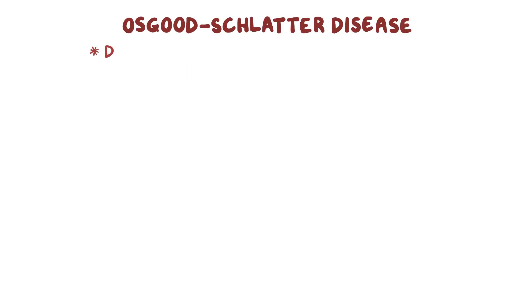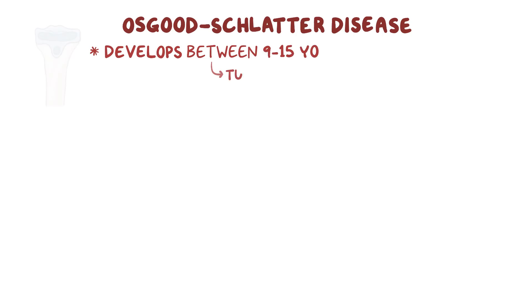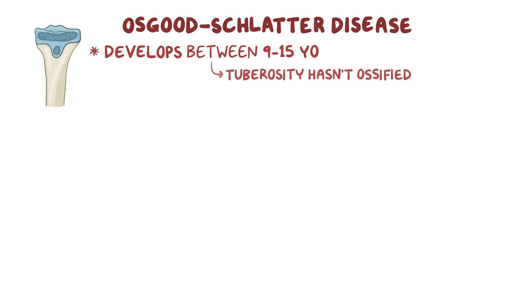Osgood-Schlatter disease typically develops between the age of 9 and 15, when the tuberosity hasn't ossified yet, and therefore isn't hard enough to resist traction of the patellar ligament.